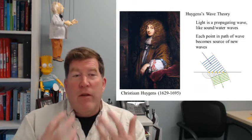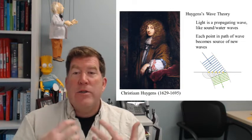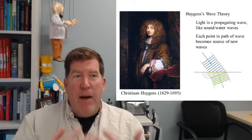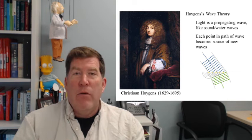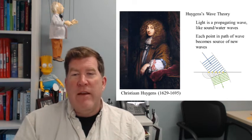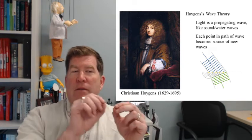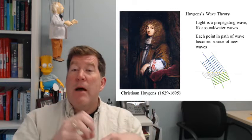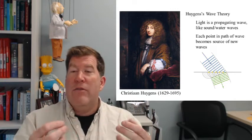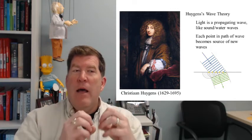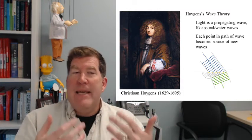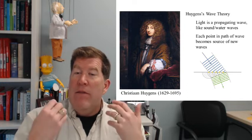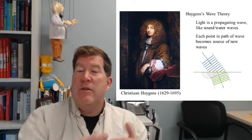Huygens put forth the theory of the nature of light saying that light is a wave, that it propagates through some medium in the same sort of manner that sound or water waves do. And a crucial piece of this is he said that every point in space that the wave reaches becomes a new source of waves. So each individual point emits a set of waves that travel out from that point. And all of those waves add up together in a way that gives you the continuation of the wave.